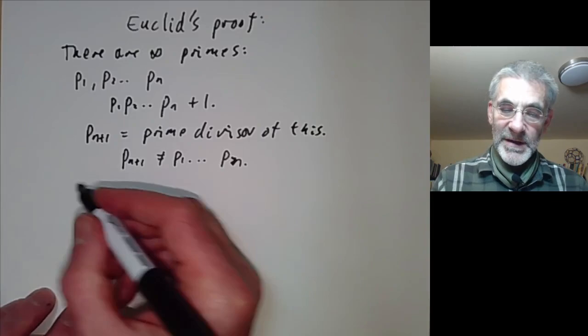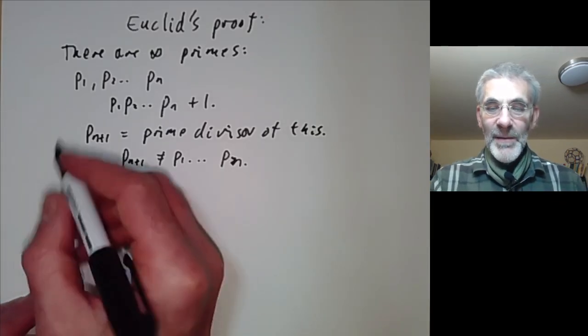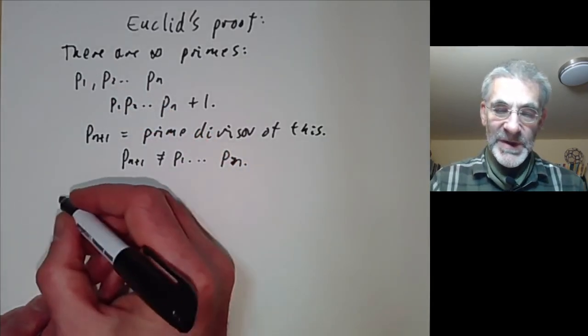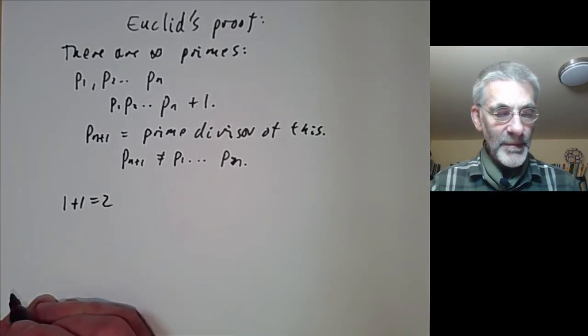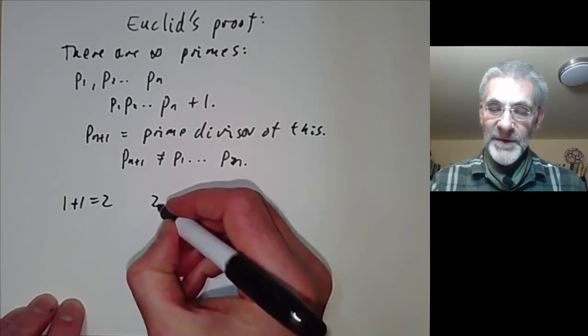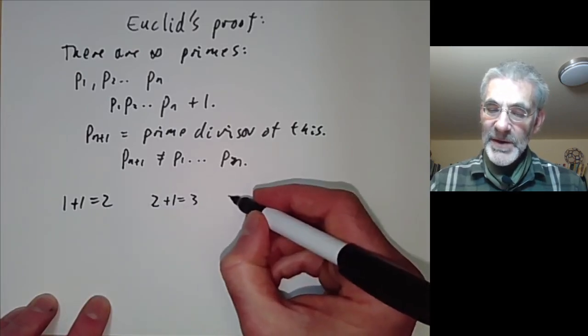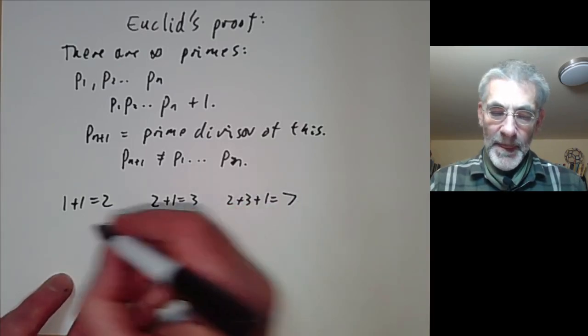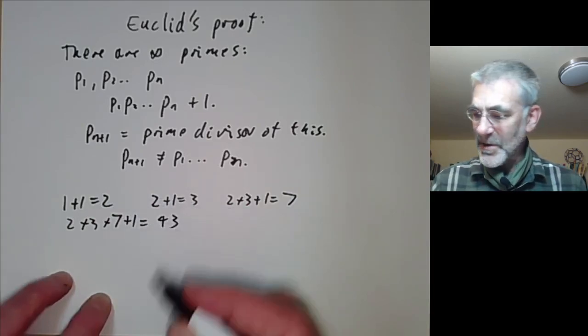So let's just see how this works. We start with the empty set of primes and we take the product of all primes in the empty set, and the product of an empty set of numbers is by definition equal to 1, so we get 1 plus 1 equals 2. Then our set of primes now has one element 2, so we take the product of them all which is just 2 and we get 2 plus 1 equals 3. Then we get 2 times 3 plus 1 equals 7 which is a new prime. And then we get 2 times 3 times 7 plus 1 equals 43 which is a new prime.